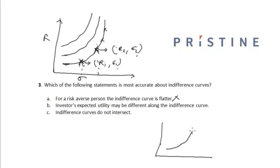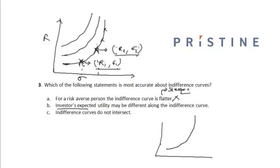Let us look at the second option: the investor's expected utility may be different along the indifference curve. This is incorrect because the various combinations of risk as well as standard deviation represent the same utility for an investor, provided they are lying on a single indifference curve.